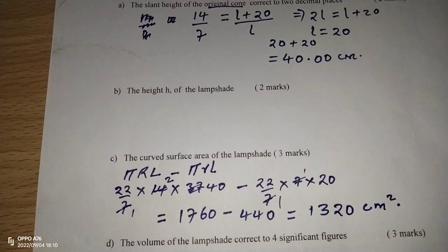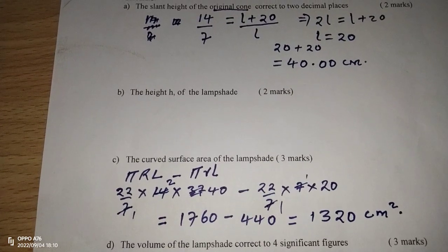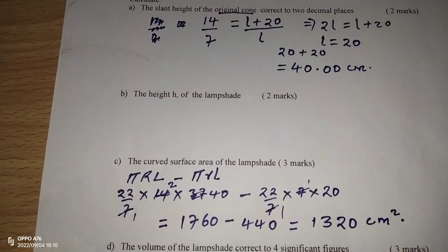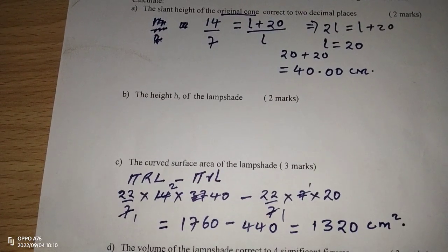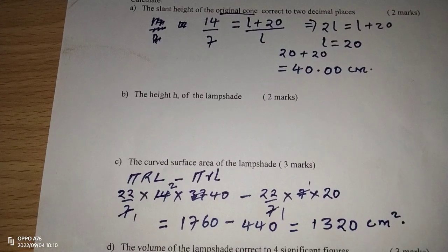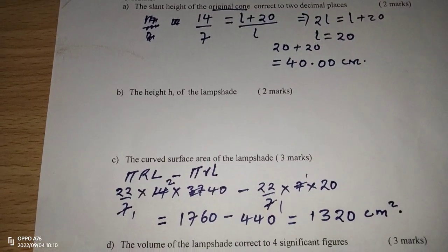Therefore, to get the curved surface area of the frustum, we take the curved area of the original cone and subtract that of the smaller cone which was cut away.